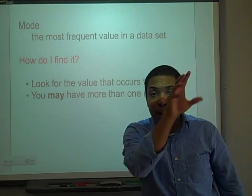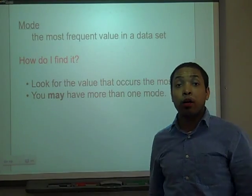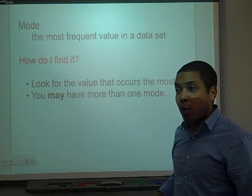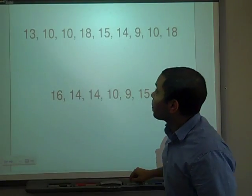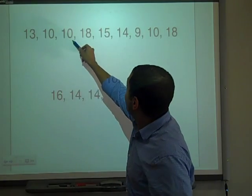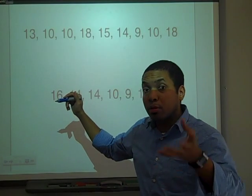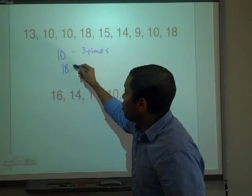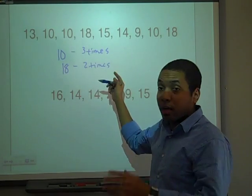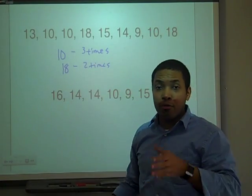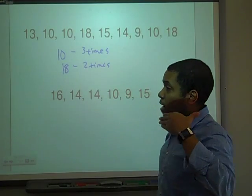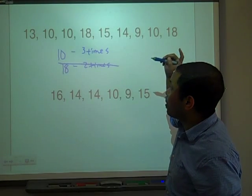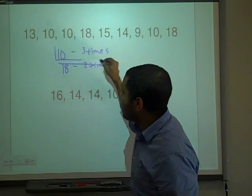The mode is the most frequent number that appears in a dataset — the value that occurs the most often. You may have more than one mode. Looking at our dataset: 13 occurs once, 10 occurs 3 times, 18 occurs 2 times, 15 occurs once, 14 occurs once, and 9 occurs once. The number that occurs the most is 10, so the mode of this dataset is 10.